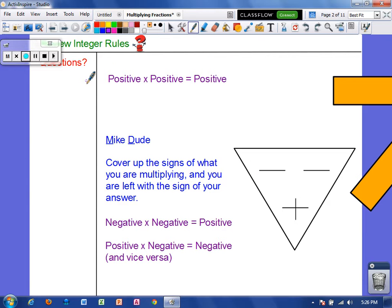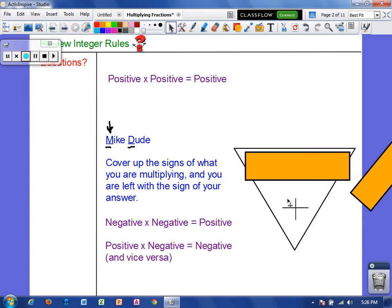Alright, let's review the integer rules for multiplying with positive and negative numbers. We already know that a positive times a positive is just a positive answer, but what do we do when there's a negative involved? Well, we have a tool for you called MikeDude. MikeDude can be used for multiplication and division, but today we're just focusing on the multiplication part. So whenever you multiply and a negative is involved, you just simply cover up the signs of the numbers you're multiplying. So let's say you're multiplying a negative number times a negative number. Well, then on MikeDude, you're just going to cover up the two negative signs. So when we cover up those two signs, we're left with a positive. So a negative times a negative is a positive answer.